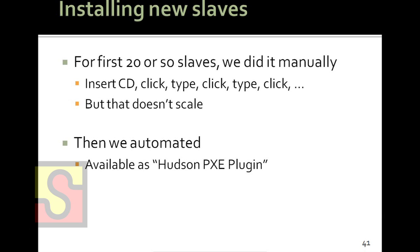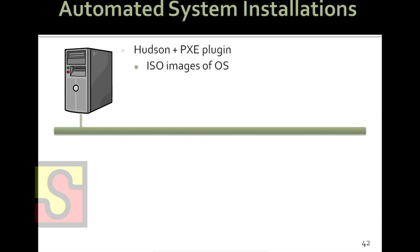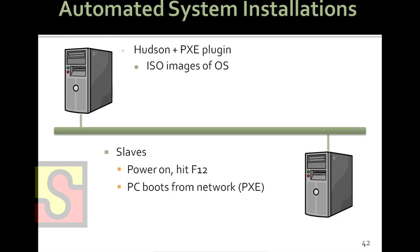Doing this at larger scale doesn't work very well. So I implemented a plugin called the Hudson Pixie plugin, which automates deployment. The way this works is you have the Hudson master on the network, you install this Pixie plugin, and in addition you need the OS ISO images of the various things you want to install. You bring in a new slave — a new computer that may or may not have anything on its HDD — connect it to the network and power it on.